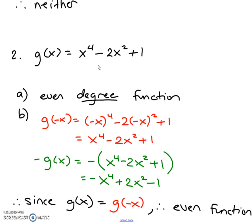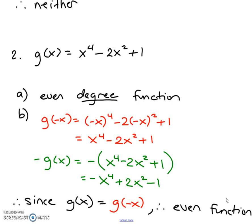To make sure it's not also an odd symmetrical function, I put a negative in front of g(x), distributing into the bracket: I get negative x to the fourth, positive x squared, and negative one. That is not the same as g(-x), so it's not an odd symmetrical function. Since the black and the red already matched, it is confirmed as an even symmetrical function. Hopefully you now understand the difference between even and odd symmetry, and between even symmetry and even degree functions.